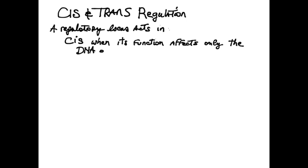The matter is relevant both in bacterial gene regulation, such as for the lac operon, and in eukaryotic regulation. A regulatory locus acts in cis when its function affects only the DNA or RNA on the same molecule.